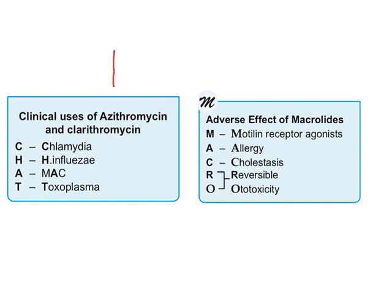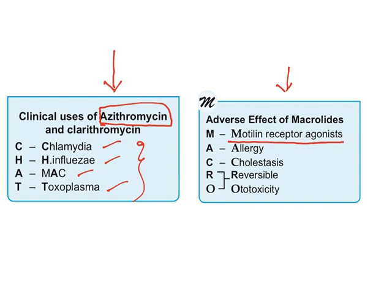The most important drug in this class is azithromycin. Its half-life is very high, so a once-daily dose is enough. Clinical uses include treatment of chlamydia, Haemophilus influenzae, Mycobacterium avium complex, and toxoplasma. The major adverse effects are: it is a motilin receptor agonist causing GI disturbance ranging from diarrhea; it also causes allergy and cholestasis, which can result in hepatitis, inflammation of the liver; and it will also cause reversible ototoxicity — hearing impairment may occur, but it is reversible.